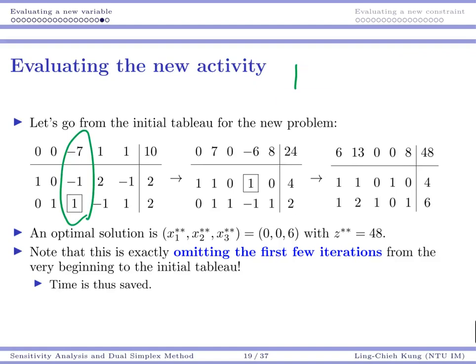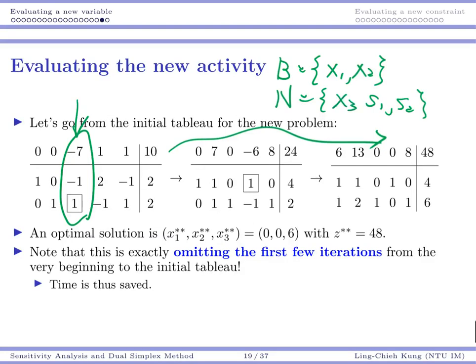B star and N star, the basic set and nonbasic set. Once I have this, I know I should enter, and then I carry some iterations and move to an optimal solution. Either you do it with tableau, or actually here what you should do is previously, B contains x1 and x2, so N originally contains s1 and s2. And because I have a new variable, I know x3 should be considered nonbasic at the beginning.